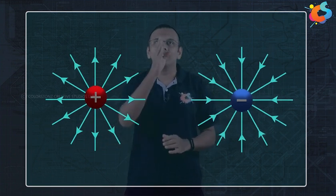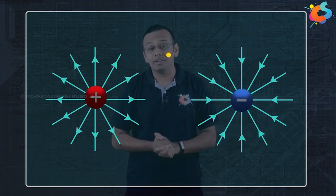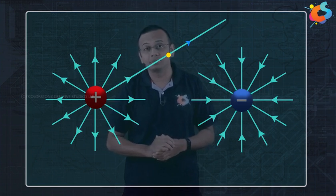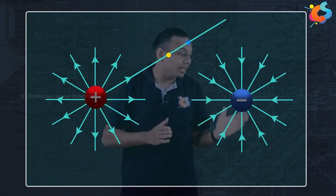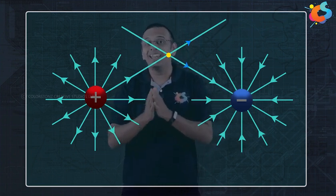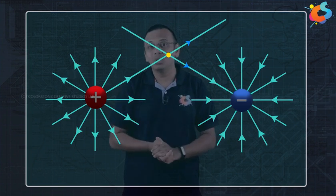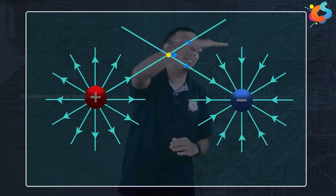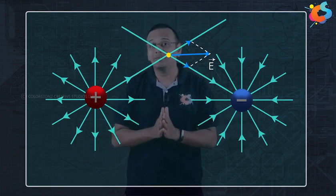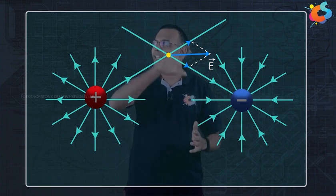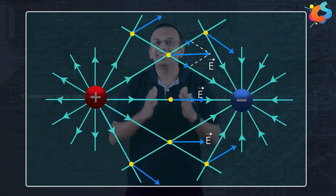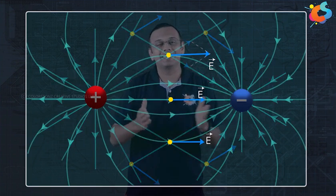For example, if we take a point near the dipole, the field due to the positive charge is repulsive and radial in one direction, whereas the field due to the negative charge is attractive and radial in another direction. The net field will be the vector sum of these two. Similarly, if we analyze the net electric field at each and every point around this system, the electric field lines come out in a characteristic curved pattern.